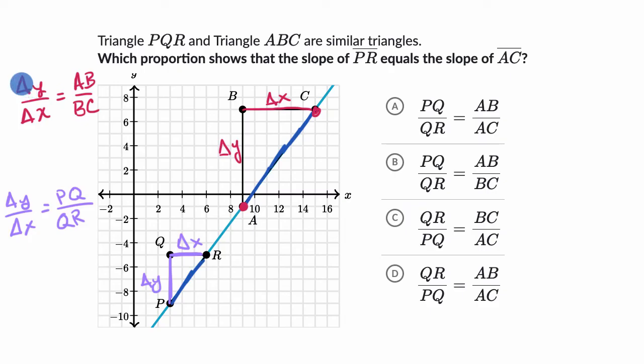So what we know is that this slope right over here needs to be equal to this slope right over here, or we could say AB over BC should be equal to PQ over QR.